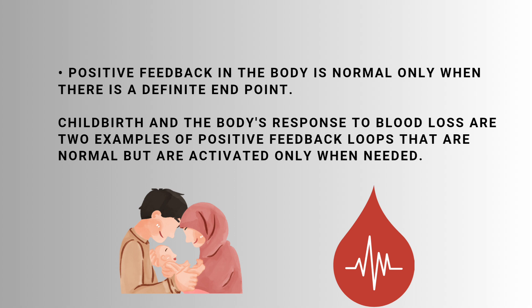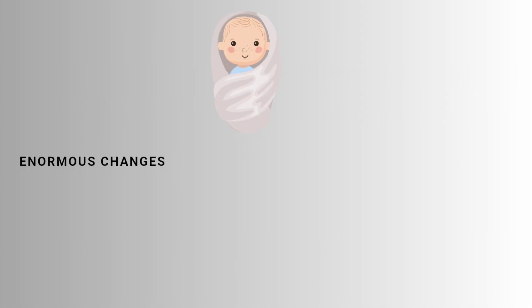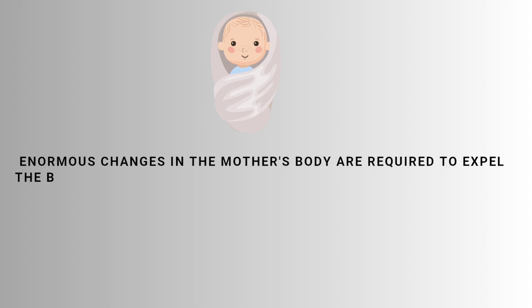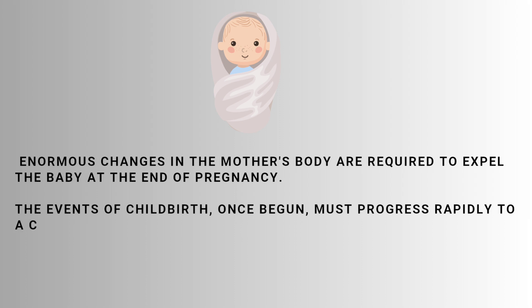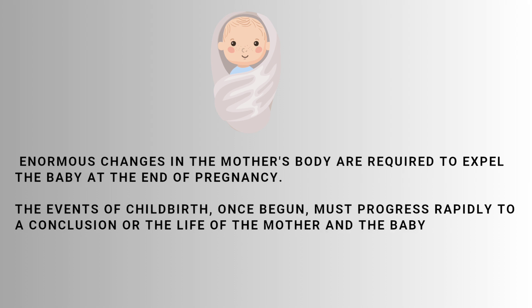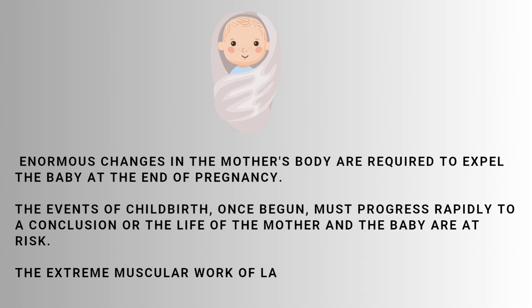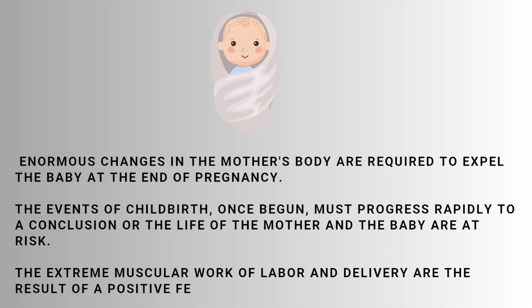We observe the changes in childbirth. In the mother's body, there are many changes so that the baby is expelled from the body. These childbirth events have one main endpoint: baby birth. We all know that there are muscular contractions in a woman's body during delivery time, and this is because of the positive feedback system.